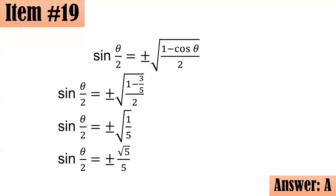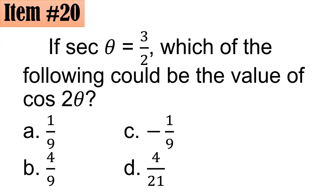Number 20. If secant theta is equal to 3 halves, which of the following could be the value of cosine 2 theta? Is it A 1 ninth, B 4 ninths, C negative 1 ninth, or D 4 over 21? Letter C daw, consistent.